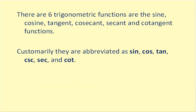There are six trigonometric functions and they are sine, cosine, tangent, cosecant, secant, and cotangent. Customarily they are abbreviated using this notation in bold.